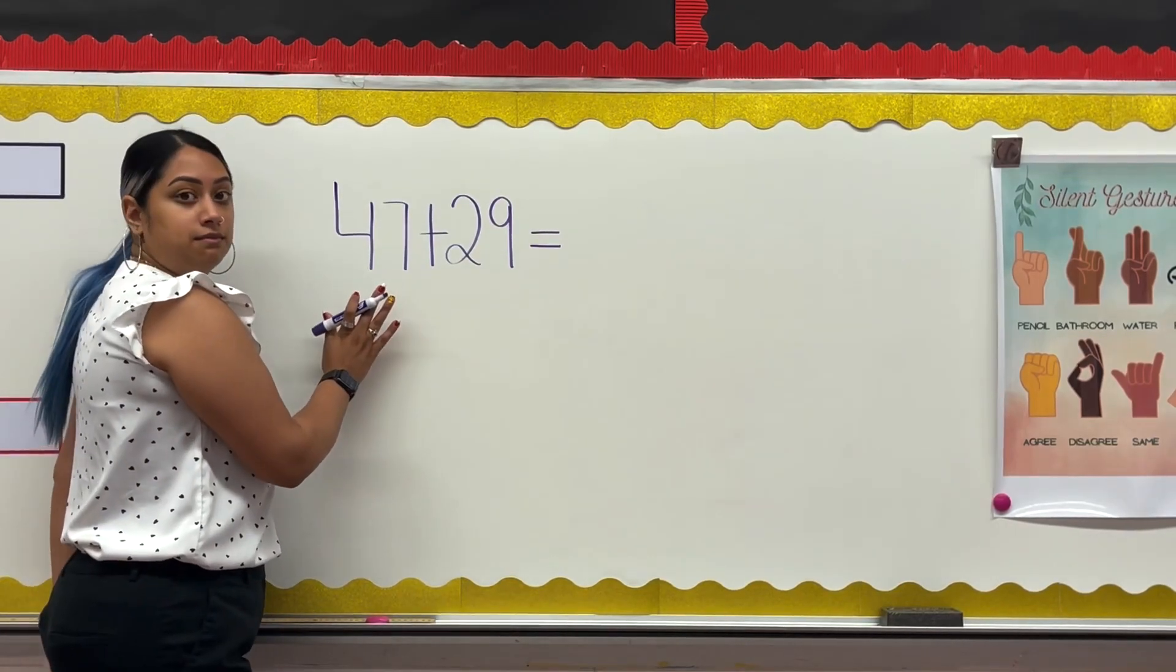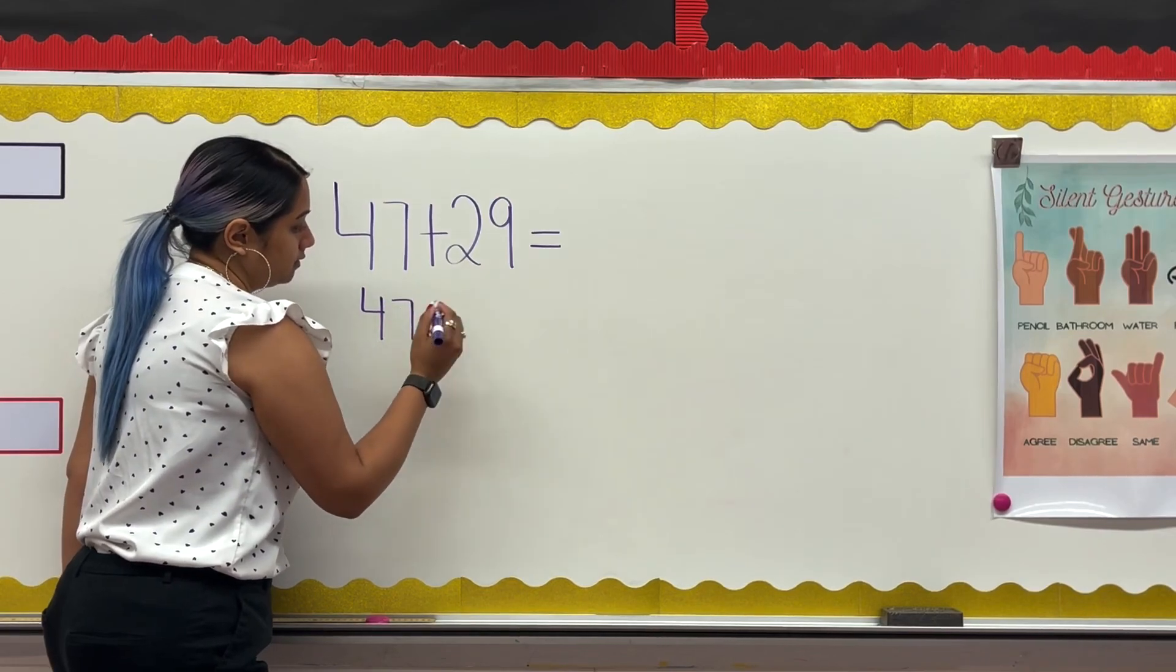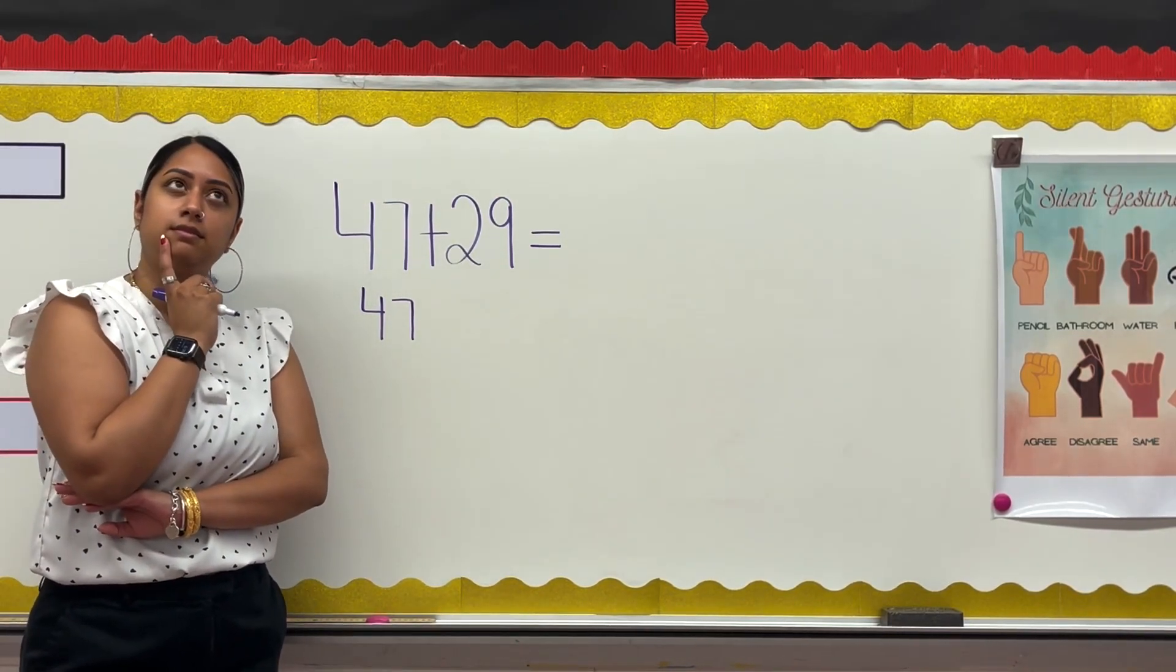The next thing I do is start with one of the addends. Sometimes it's easier to start with the bigger addend and think, what can I add to get to a friendly number?